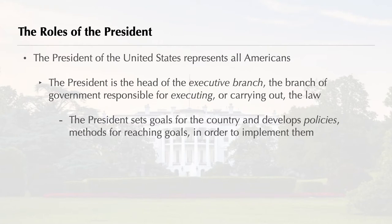How many Americans, though, have a clear picture of what the president does? The president is the head of the executive branch, the branch of government responsible for executing, or carrying out, the laws. However, carrying out laws passed by Congress is only part of the president's job. The most important duty is to set goals for the nation and to develop policies, which are methods for reaching those goals. In spite of having many advisors, the president alone is responsible for making the final decisions about many important issues facing the nation. This heavy responsibility goes with an office that many think is the most powerful in the world.